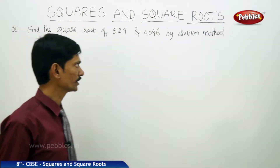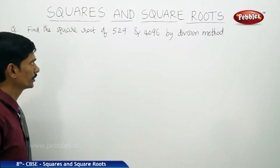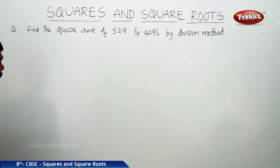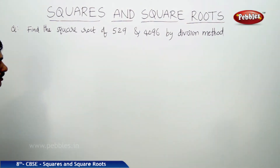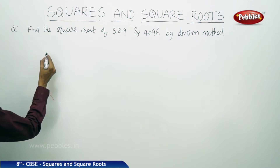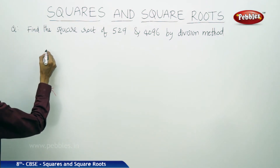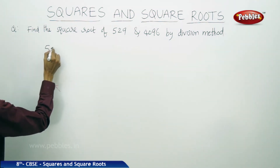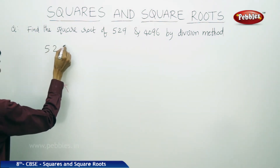Now let us see the division method by doing two problems. Find the square root of 529 and 4096 by division method. First we will write the first number 529.